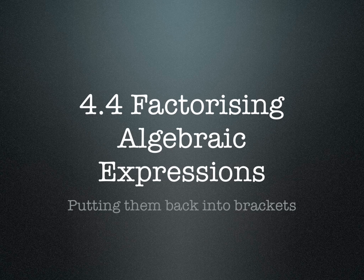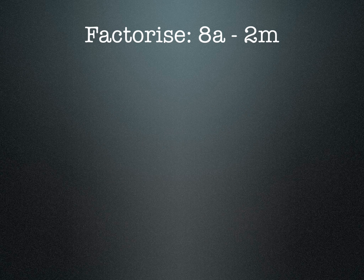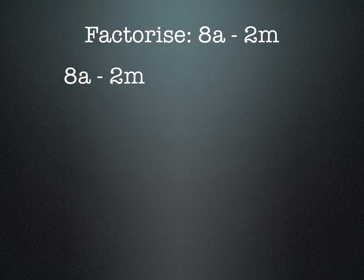Suppose we're asked to factorize 8a - 2m. We need to look closely at this expression and look for common factors in both terms. If we look at 8a, that's really 2 × 4 × a, and -2m is -2 × m.